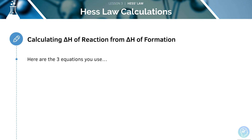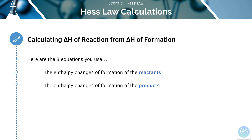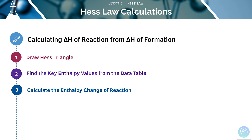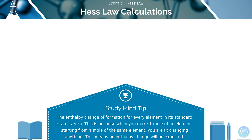To calculate the enthalpy change of reaction from the enthalpy changes of formation, we can use the following three equations. First, we look at the enthalpy changes of formation of the reactants and those of the products. Then we can calculate the unknown enthalpy change of the reaction. We need to draw a Hess's triangle, find the key enthalpy values given in the data table, and then calculate the enthalpy change of the reaction using the enthalpy of formation of the products and the reactants. If an element is in its standard state, its enthalpy of formation will be zero.